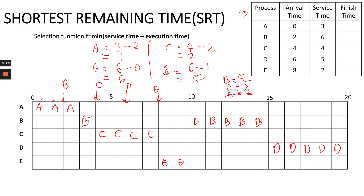Let's look at the finish times for all processes. Process A finished at time 3, process B finished at time 15, process C finished at time 8, process D finished at time 20, and process E finished at time 10. This is how we perform Shortest Remaining Time scheduling. In the next video, I will continue with the Round Robin method.